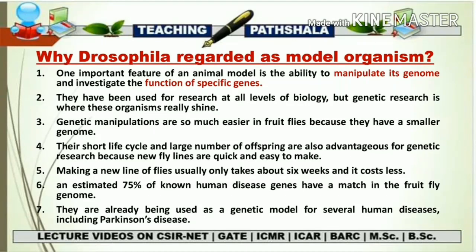An estimated 75 percent of known human disease genes have a match in the fruit fly genome. This is one of the most important factors making Drosophila a model organism, as diseases that affect humans can be tested on Drosophila with positive results. Scientists can use knockin and knockdown of different genes and observe phenotypic effects in Drosophila to draw conclusions about human biology.